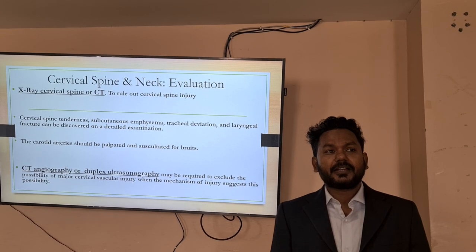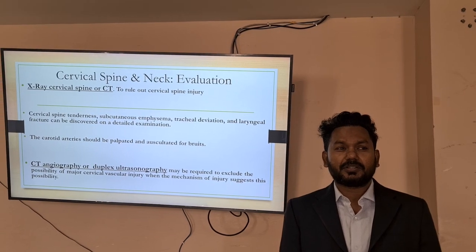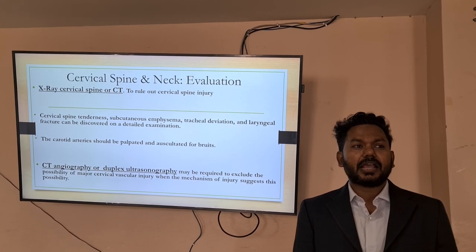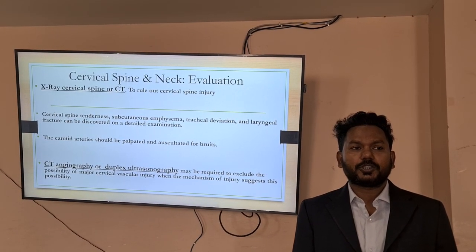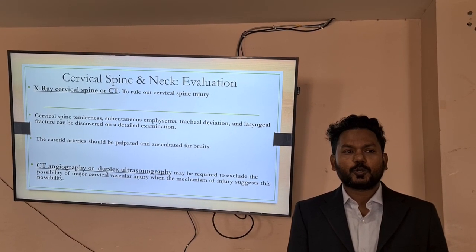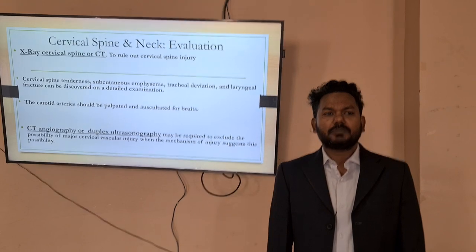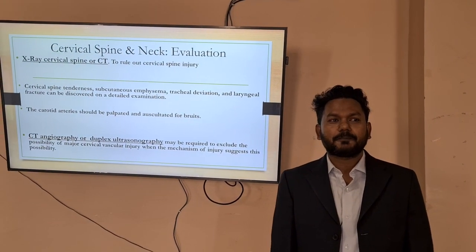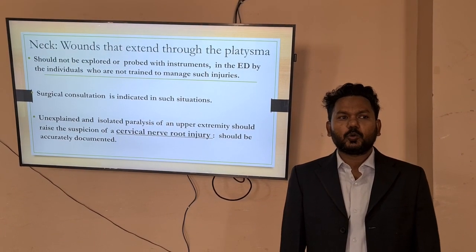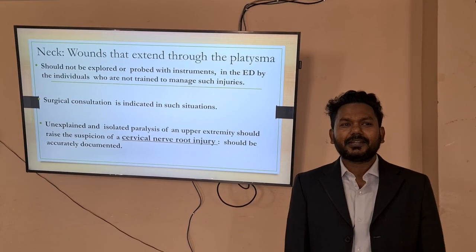Cervical spinal injury can be excluded by getting an X-ray of the cervical spine or CT scan. Clinical examination can discover findings like cervical spine tenderness, subcutaneous emphysema, tracheal deviation, and laryngeal fracture. The carotid artery should be palpated and auscultated for the presence of bruits. CT angiography or duplex ultrasonography may be required to exclude major cervical vascular injury when the mechanism of injury suggests such a possibility. If a neck wound extends through the platysma, it should not be explored or probed with instruments in the emergency department by individuals not trained to manage such injuries.